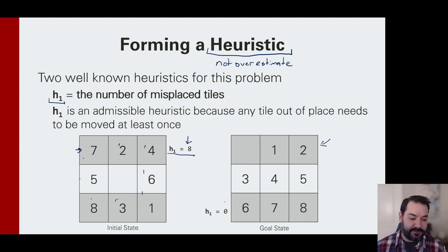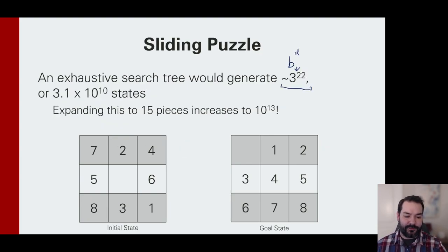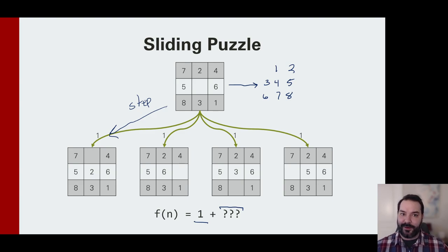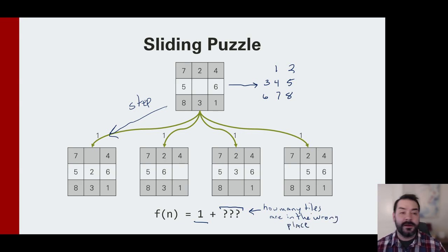In that sense, my heuristic for when I'm in the goal condition would be zero because none of them are in the wrong spot. If we're thinking about this from a path stepping down motion, what we're essentially asking with our h here is: for each one of those potential steps, how many tiles are in the wrong place?